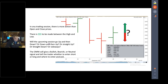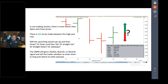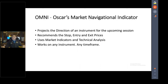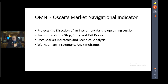The Omni will tell the trader whether to enter short or long, and where to enter and exit that trade — stops included. OMNI stands for Oscar's Market Navigational Indicator. It projects the direction of an instrument for the upcoming session, recommends the stop, entry, and exit prices, uses market indicators and technical analysis, and works on any instrument in any time frame.